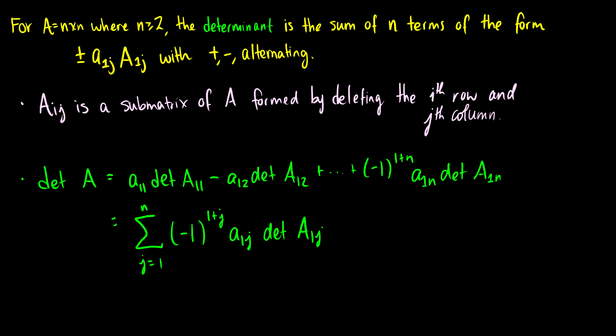So then we say that the determinant is the sum of n terms of the form plus or minus A1j capital A1j. And these pluses and minuses are going to alternate. So first, let's talk about what this A1j is.